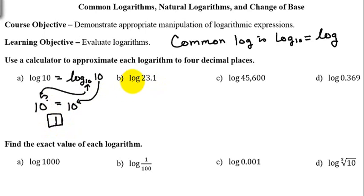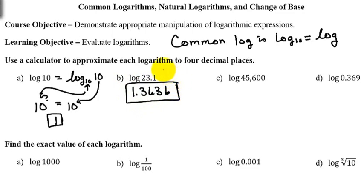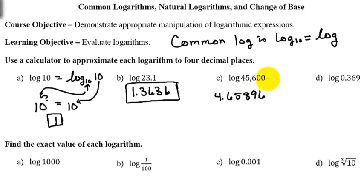The next example is log of 23.1. You'll have to put this into your calculator — push your log button first and then type in 23.1. You should get 1.3636 and then more digits; after the last six there's a one, so we round to 1.3636. The next example is log of 45,600: push the log button and type in 45,600, and I get 4.65896.